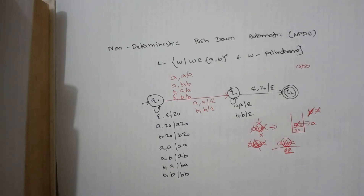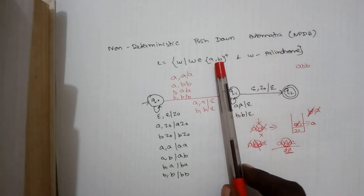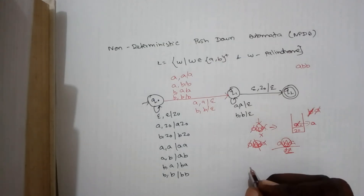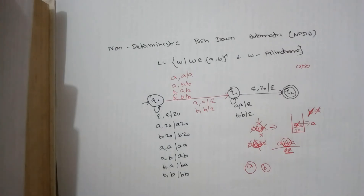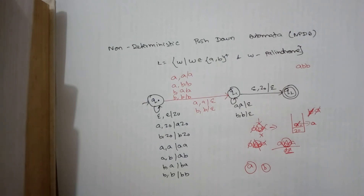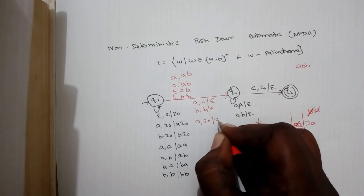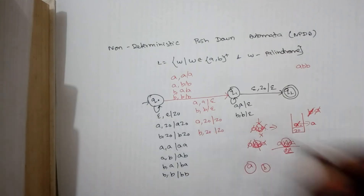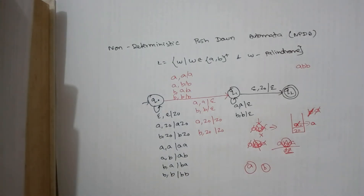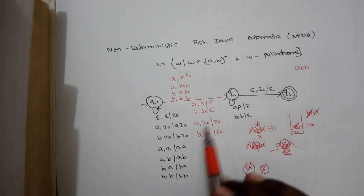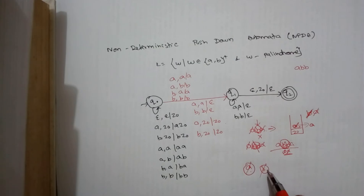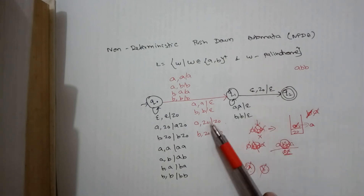There is one more extra category: since the input is made up of A and B-plus, a single A or single B is also a valid palindrome — a string and its reverse are the same. For a single element, the transition is: on input A with Z0 in stack, keep Z0; similarly for B with Z0. When there is only one element, we leave it alone, the stack contains Z0, and since this is an odd-length case, we accept the input.